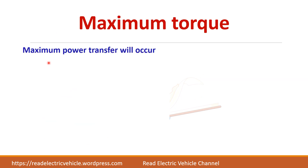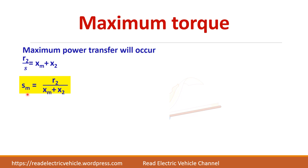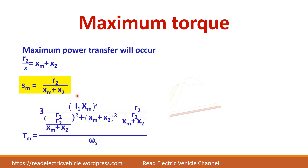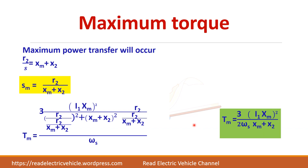Now we will find the maximum torque. According to the maximum power transfer theorem, when the resistive part equals the reactive part, maximum power transfer occurs. So we set the resistive part equal to the reactive part and equate them. Simplifying gives the slip value Sₘ at which maximum torque occurs. Substituting this slip value back into the torque equation and simplifying gives the expression for maximum torque.